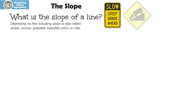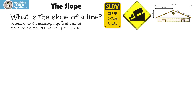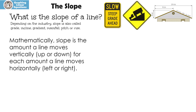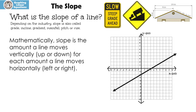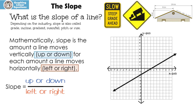I'm sure that you've seen these pictures before. Mathematically, slope is the amount a line moves vertically — that's up or down — for each amount a line moves horizontally — that's left or right. The slope equals the vertical movement up or down for every horizontal movement left or right.